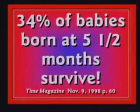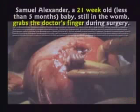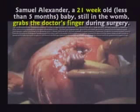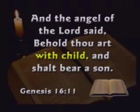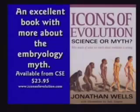Thirty-four percent of babies born at five and a half months survive. You may have heard about the surgery performed on a baby before birth — they cut the mother open, cut the uterus open, and there's the baby holding the doctor's finger at five months along. The angel of the Lord didn't say 'thou art with fetus' — he said 'you are with child.' Get more on the embryology lie in the book Icons of Evolution.